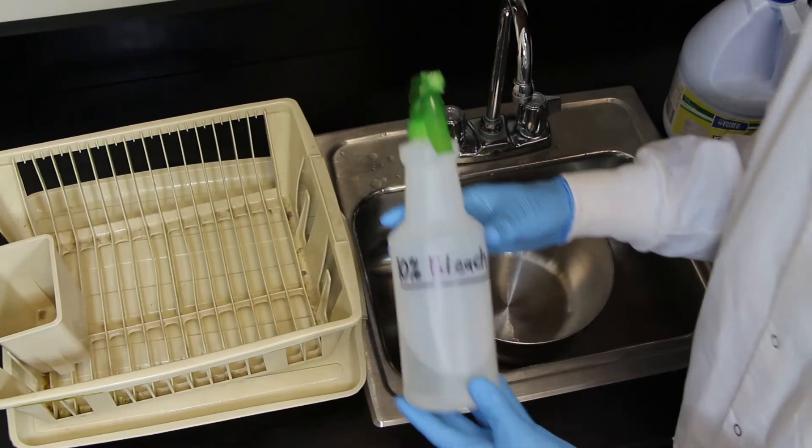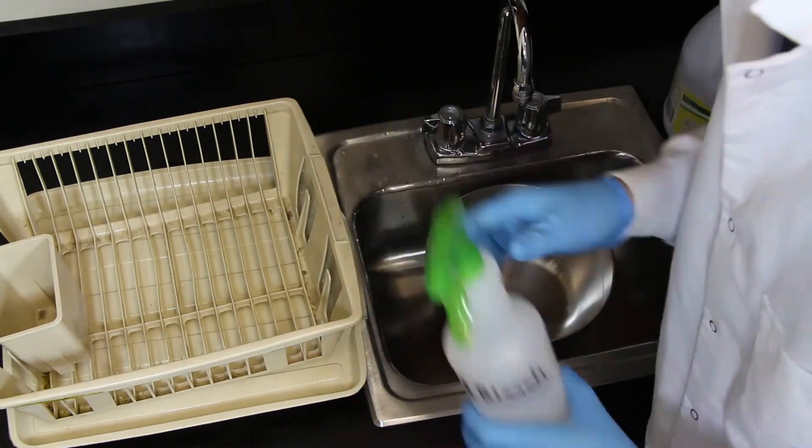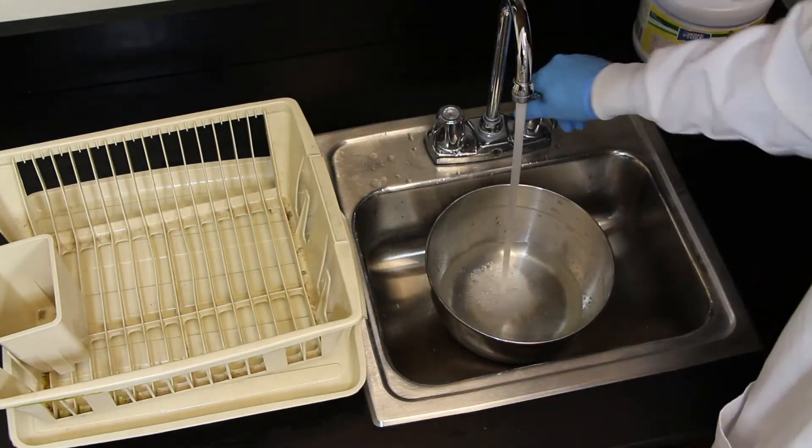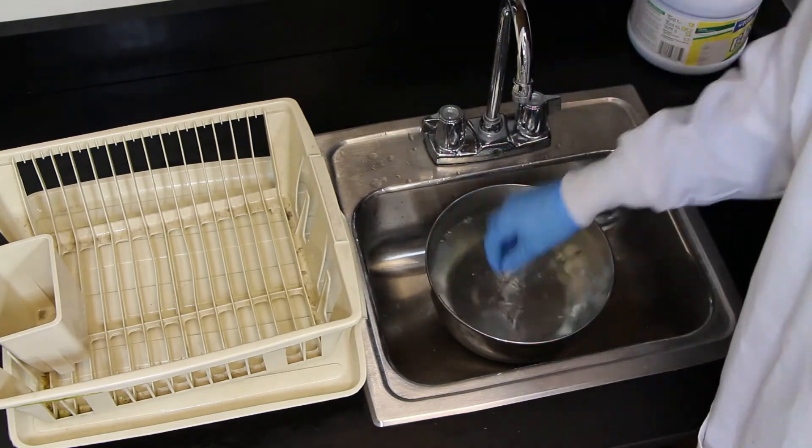That main assembly piece and that mask are then going to get soaked in a 10% bleach solution. Fill up your 10% bleach solution, put the mask and the main air piece in there, wait about 5 to 10 minutes for that to disinfect, pull it out and rinse it off real good to make sure there's no bleach residue left on those, and then just let them air dry in some sort of a drying rack.